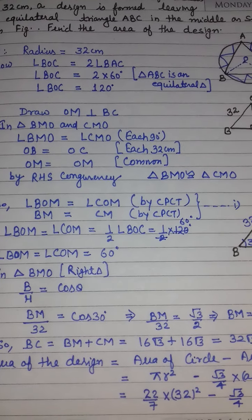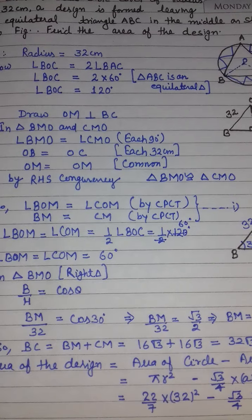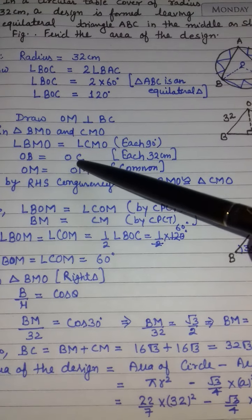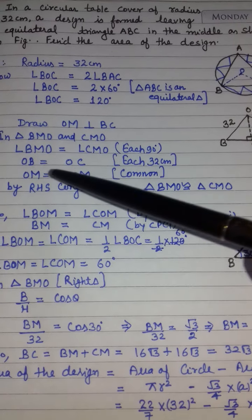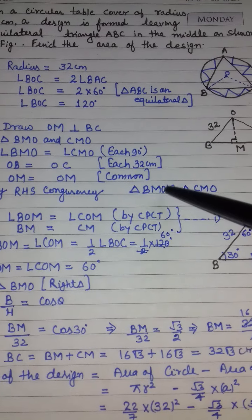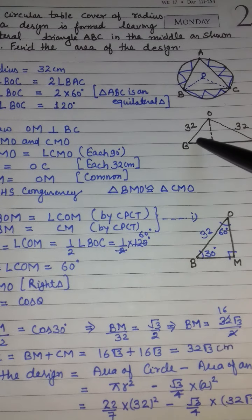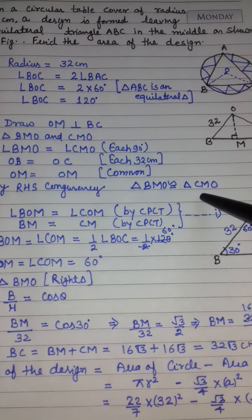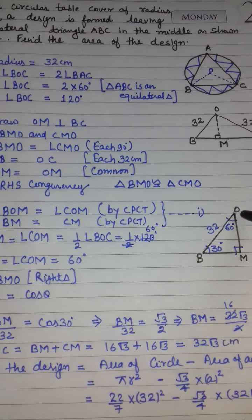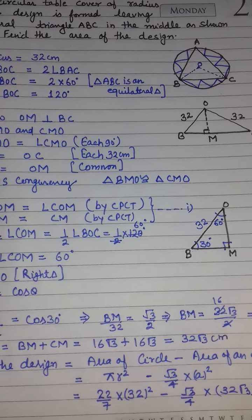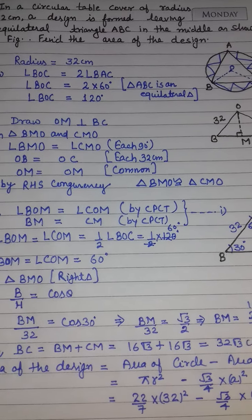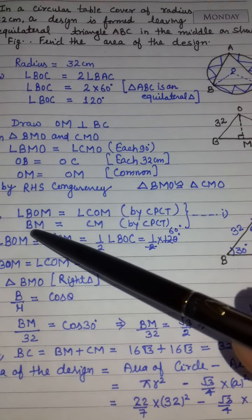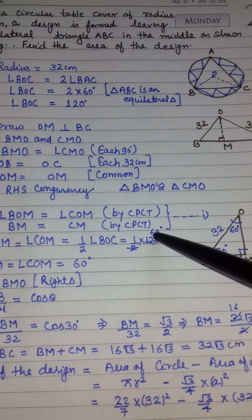Draw OM perpendicular on BC. In triangle BOM and triangle COM: angle BOM और angle COM दोनों 90° के हैं; OB और OC दोनों equal हैं क्योंकि radius हैं; OM और OM common हैं। तो by RHS property दोनों triangles congruent हैं। Triangle BOM ≅ Triangle COM. By CPCT, angle BOM = angle COM।